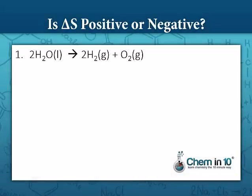Let's look at some examples. Remember, we're going to look at states of matter and number of particles. Here we have two molecules of water breaking up into two molecules of hydrogen gas and one molecule of oxygen gas. We're going from liquid to gas, which looks like a positive entropy change, and we're going from two particles to three particles, so entropy change is positive.